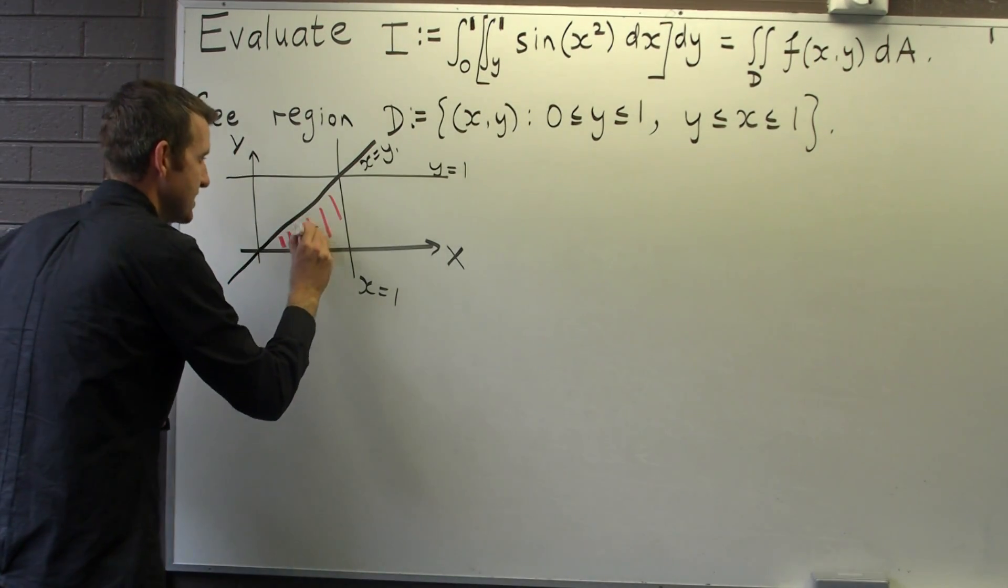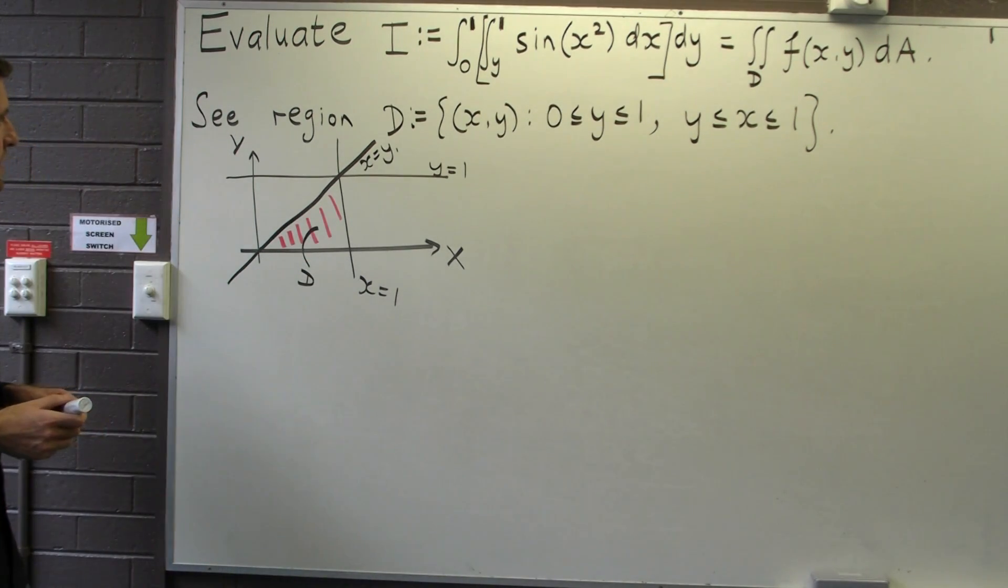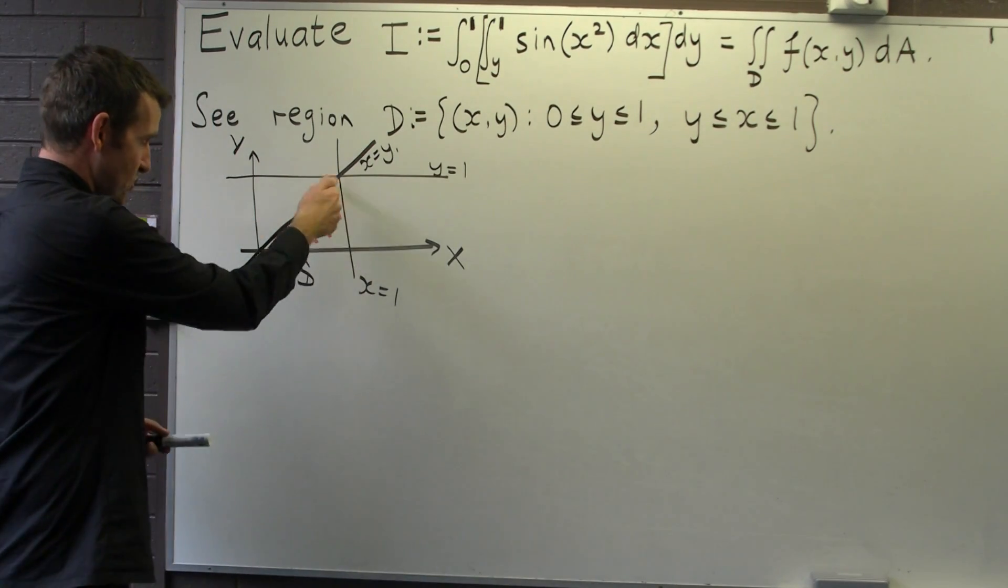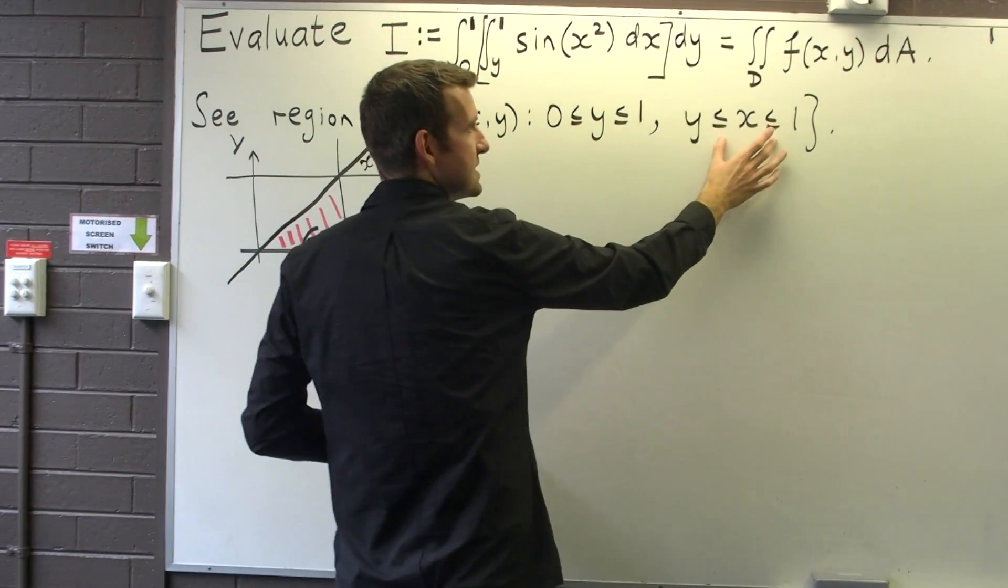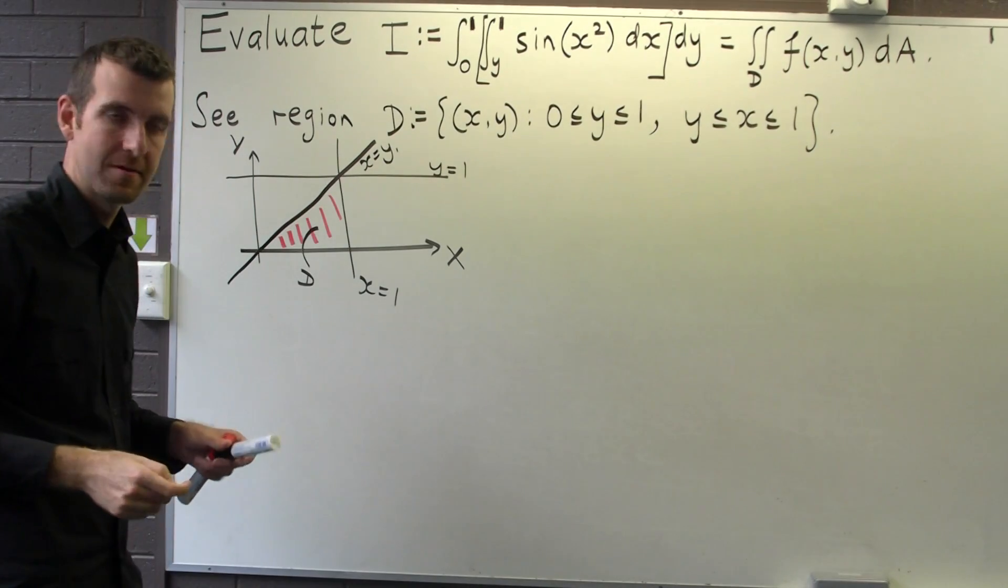So this will be my region D. Okay, so how do I re-describe this triangular region in terms of two parallel lines bounding x and two non-parallel lines bounding y?